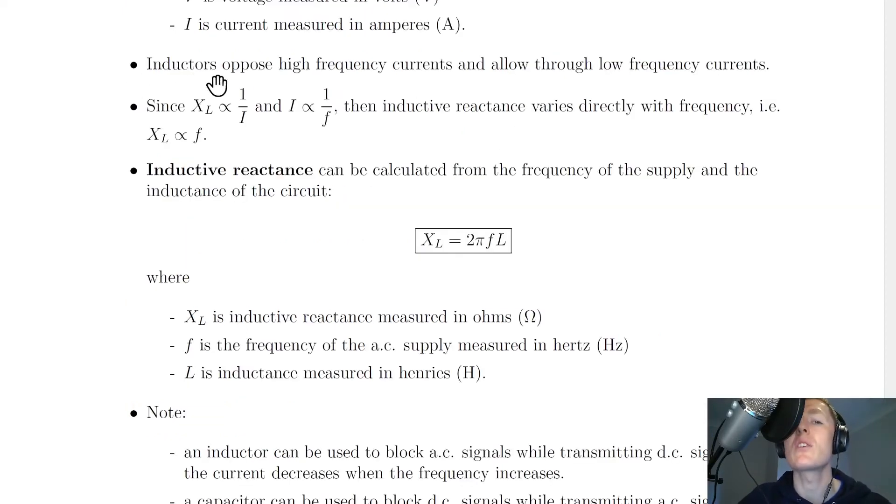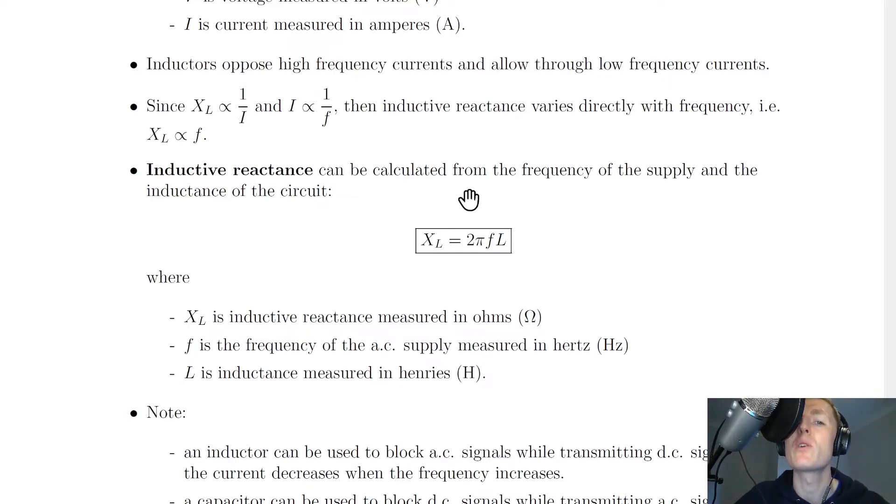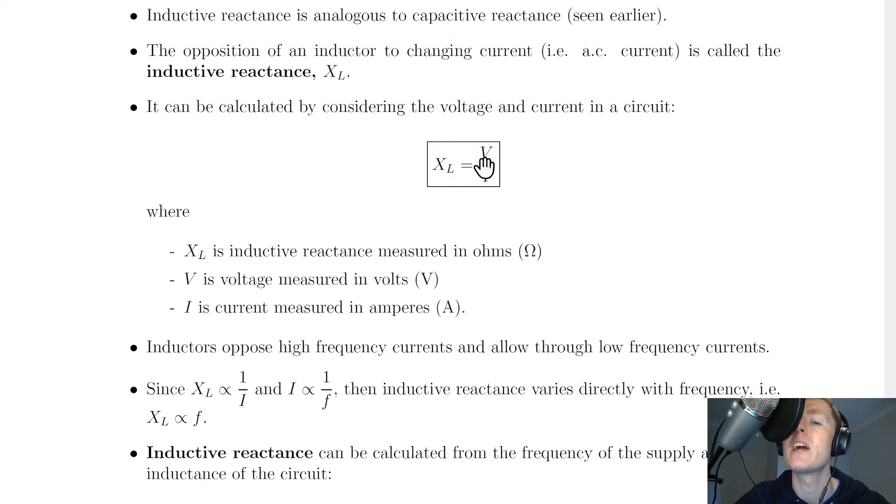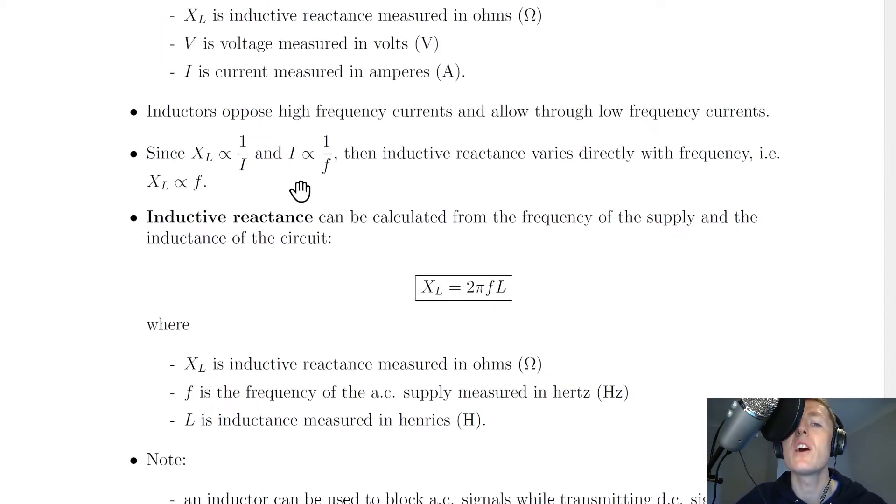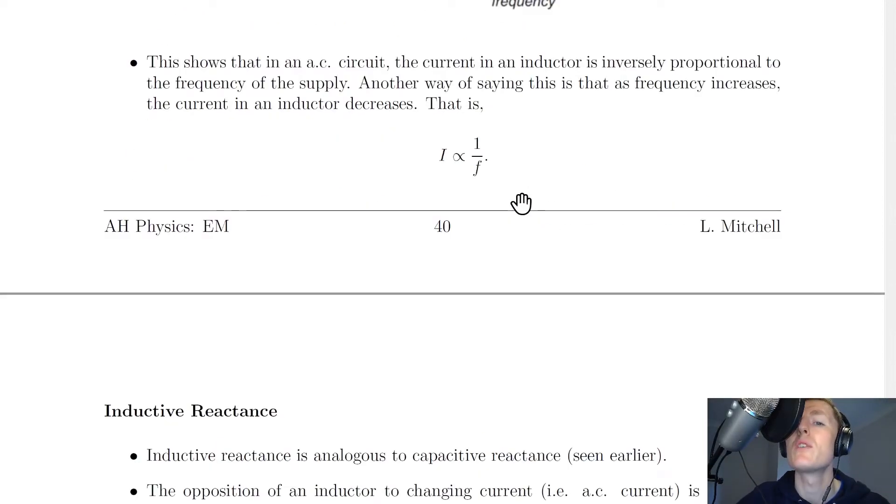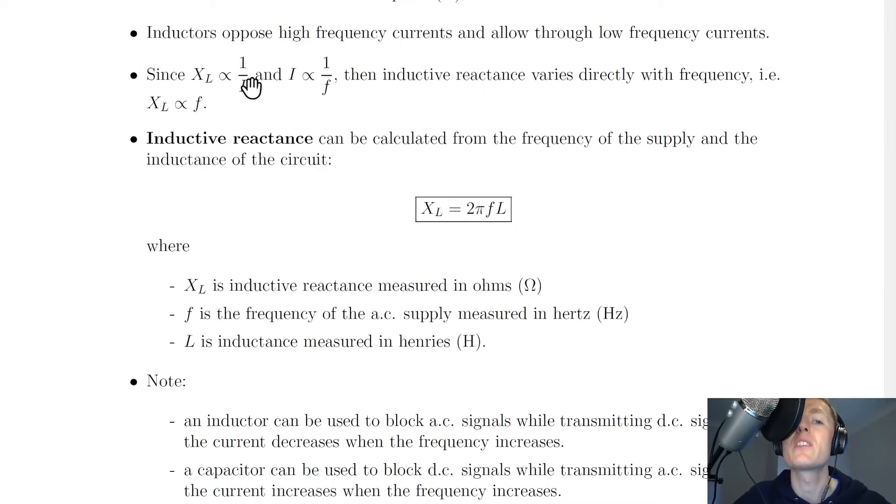Next it says that inductors oppose high frequency currents and allow through low frequency currents. So since XL is proportional to 1 over I from this relationship here, ignoring the voltage, and the current I is proportional to 1 over the frequency for inductors in AC circuits, which we saw in the previous video on inductors in AC circuits.